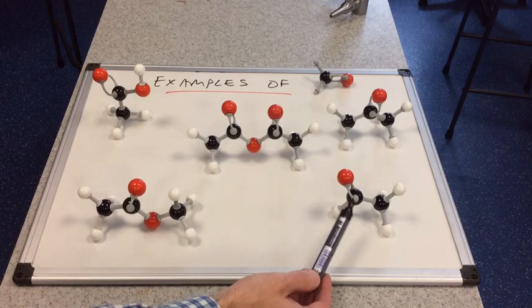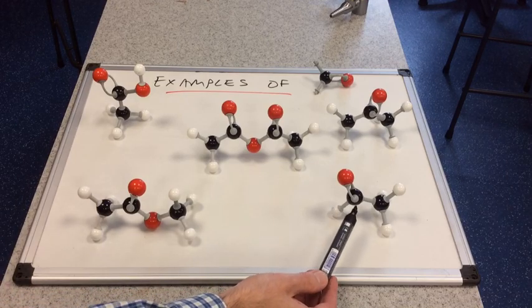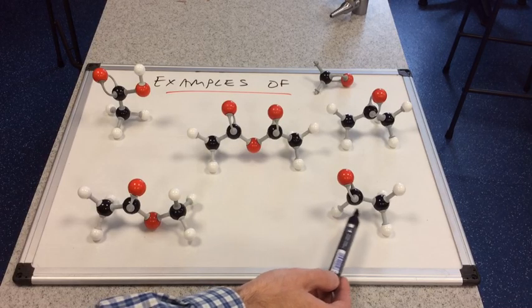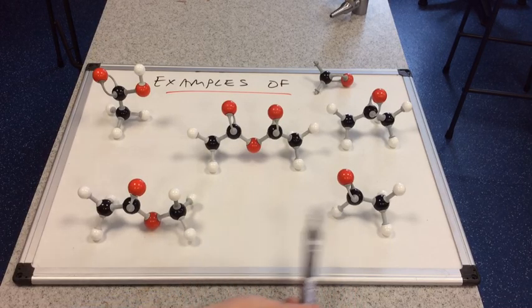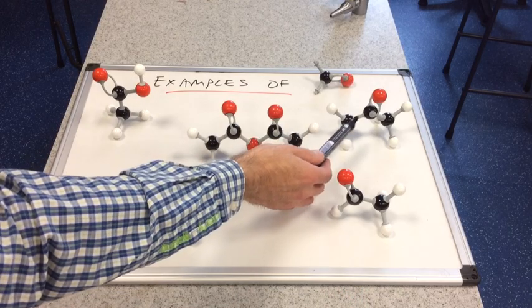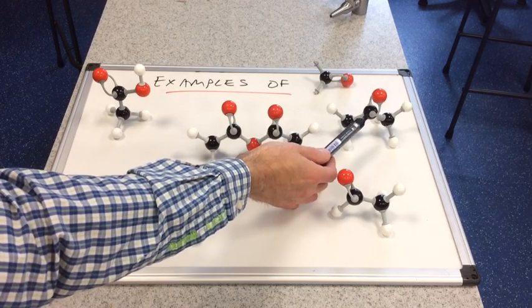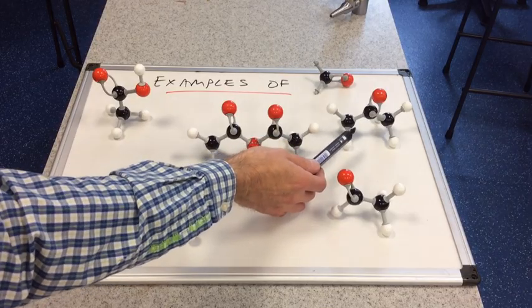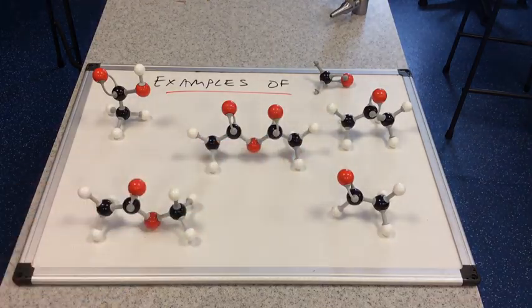Looking at this one, we've got the carbonyl group here at the end of the carbon chain. So we've got a hydrogen here. So this is an aldehyde - ethanal with two carbons. This example has the carbonyl group there with carbon either side. So this is a ketone called propanone with three carbons.